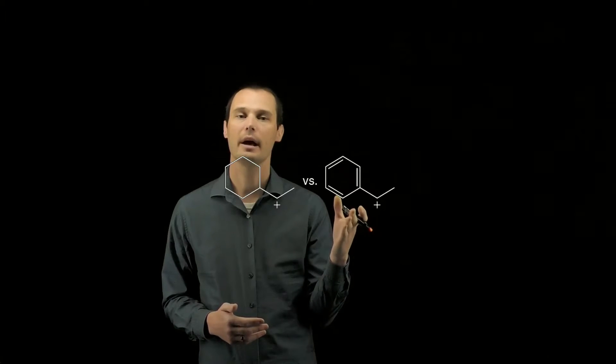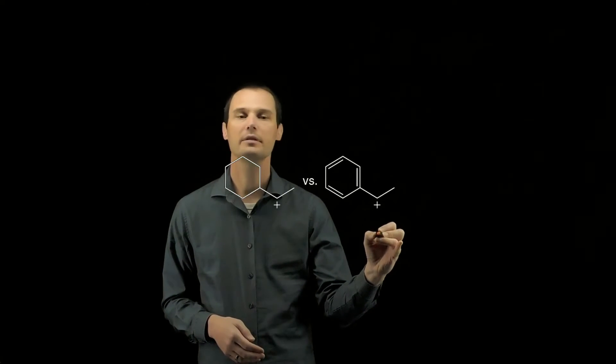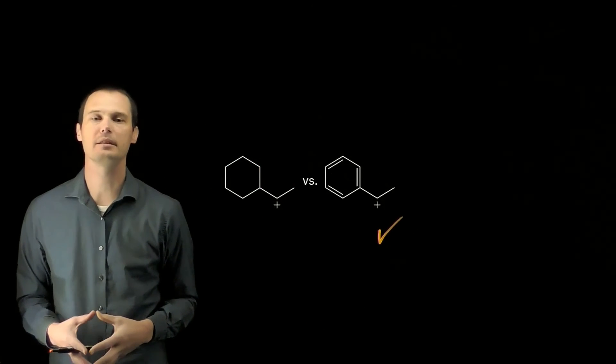Being resonance stabilized makes a carbocation more stable than a carbocation that cannot be stabilized by resonance. Therefore, this carbocation on the right will be the most stable carbocation in this pair.